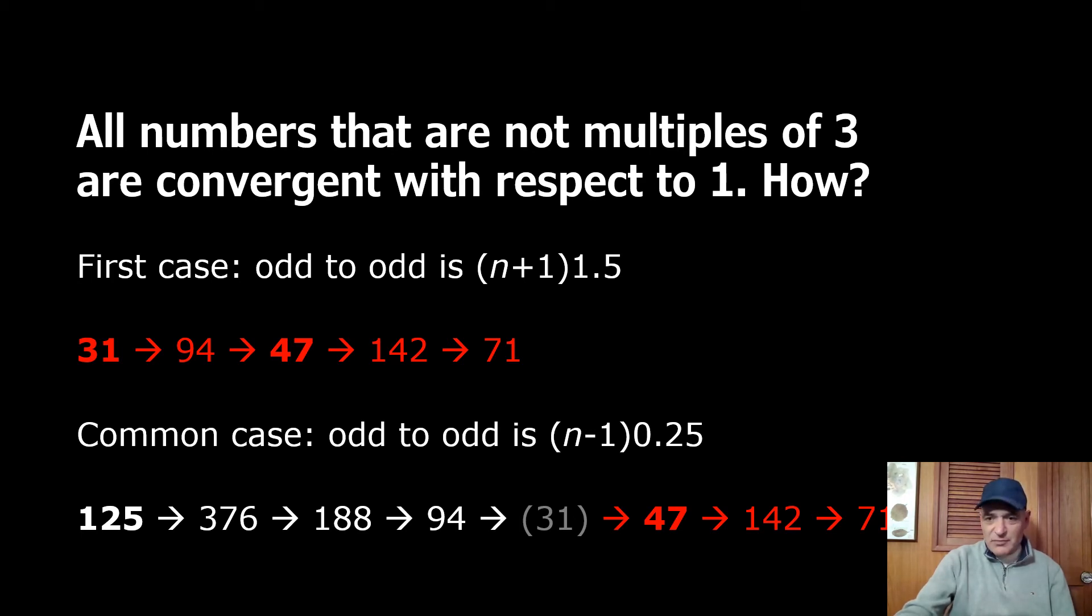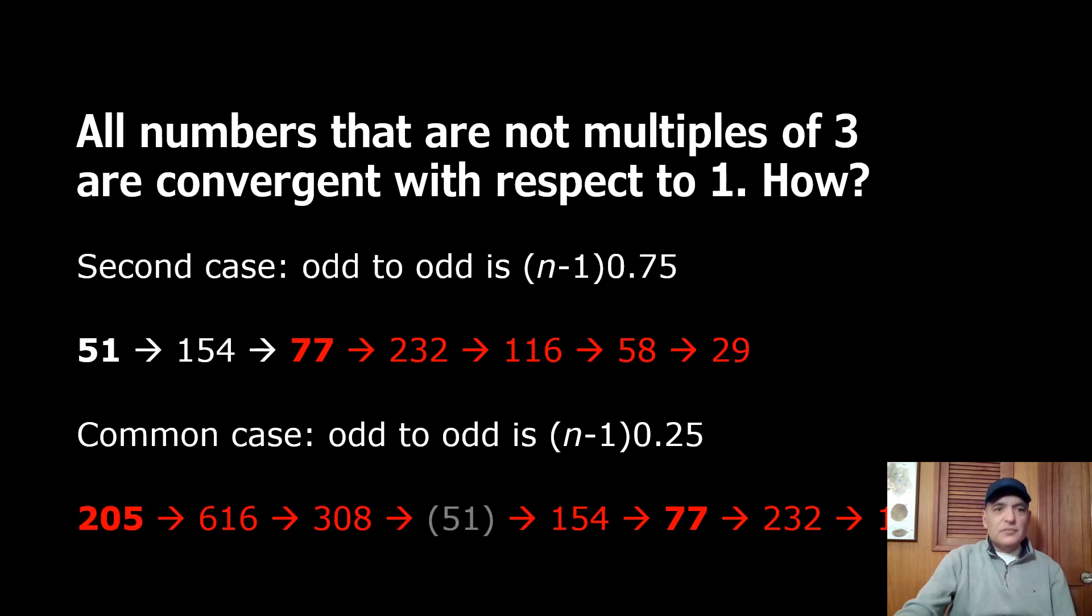That's the key thing. This is the second case and again we have a situation where the first number 51 is hidden in the common case for the even odd sequence. 51 is hidden but again we get from 51 to 77 and we get from 205 to 77.